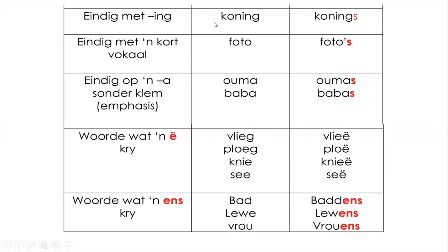As iets eindig met ING - like 'koningin' - we just add an S. Koningins. As iets eindig met 'n kortvokaal - like 'voetjie' - we add S. Voetjies. As iets eindig op 'n A sonder klem - without emphasis on the A - like 'oma' or 'baba' - we just add an S, like the English plural. Oma word oma's. Baba word baba's.